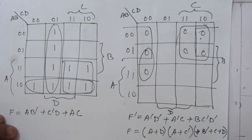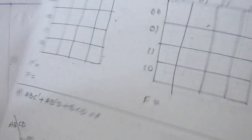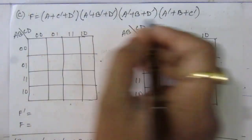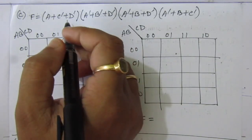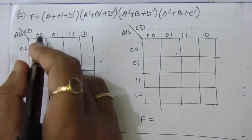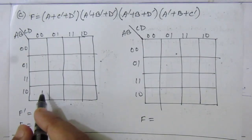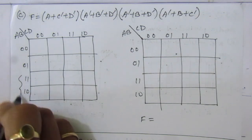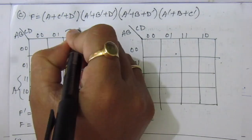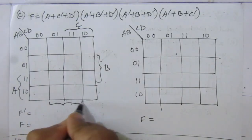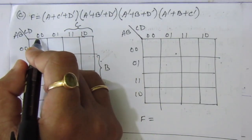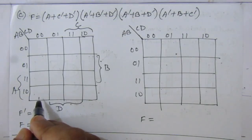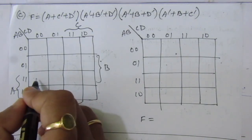Now let us go to the third part of the problem. In the third part we are given a product of sums expression, so we put zero values for each factor. For the term a + c-bar + d-bar: c-bar d-bar means this column, and a is these two rows. So a, c-bar, d-bar — c-bar + d-bar means c is also zero and d is also zero, giving this column — and a is the last two rows, so we put zero here.